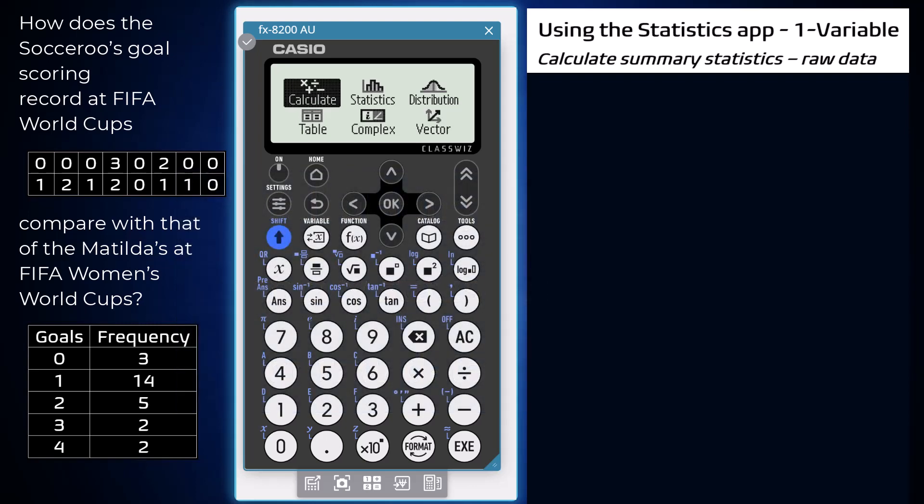This functionality can be used to find the summary statistics for a data set like this one, the number of goals scored by the Socceroos in FIFA World Cups from 1974 to 2018.